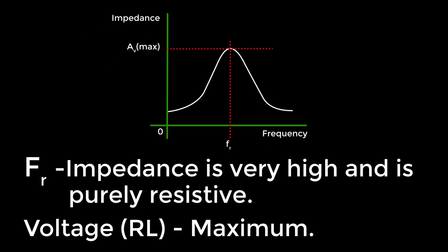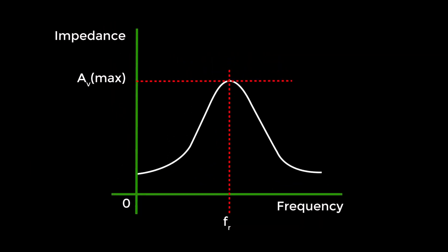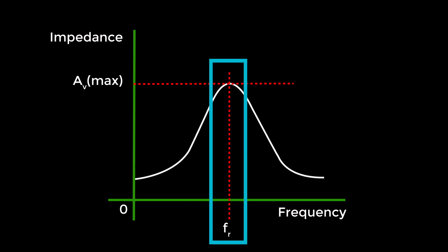At resonant frequency fr, the impedance of the parallel tuned circuit is very high and is purely resistive. The voltage across RL is therefore maximum when the circuit is tuned to resonant frequency. Hence, the voltage gain is maximum at resonant frequency and drops off above and below it. The higher the Q, the narrower the curve will be.